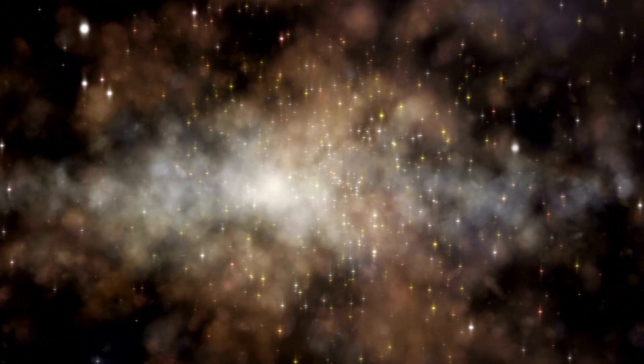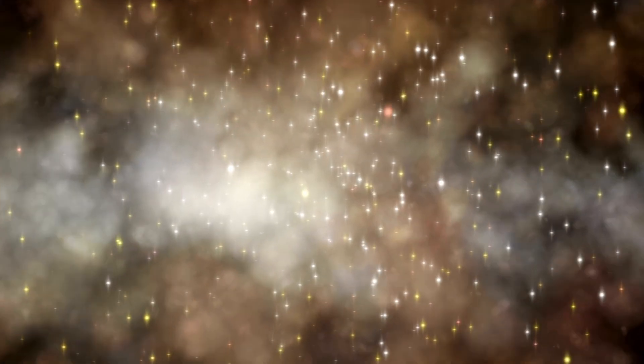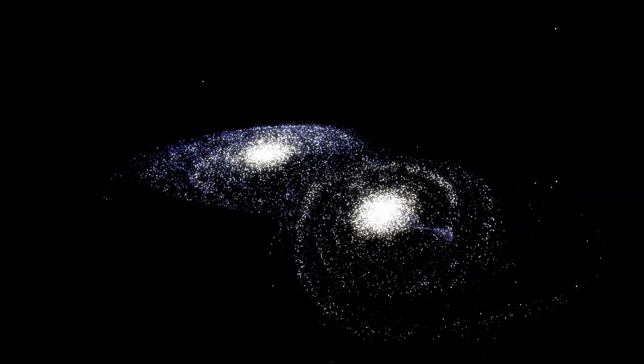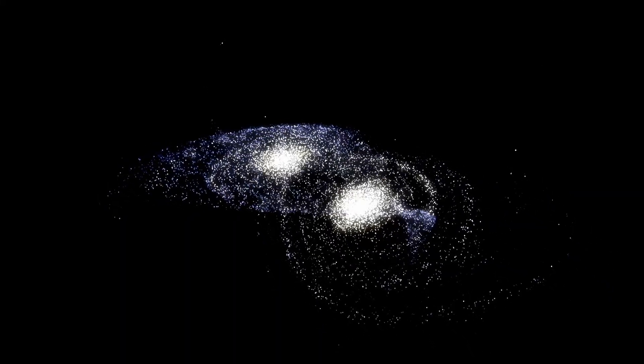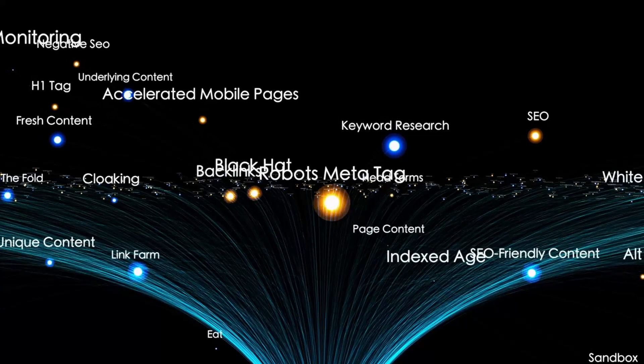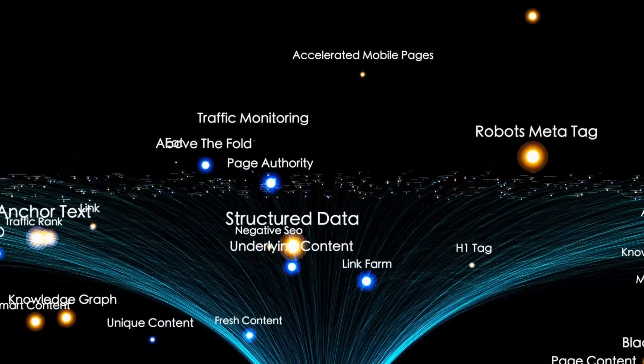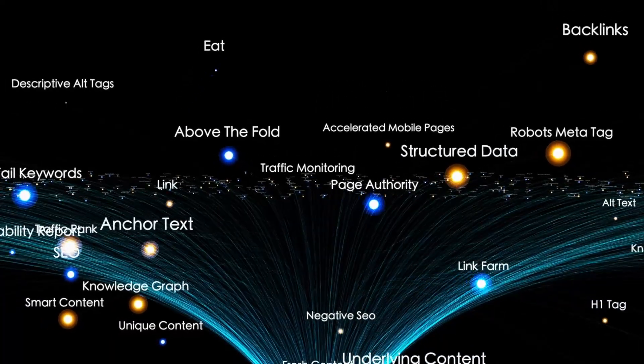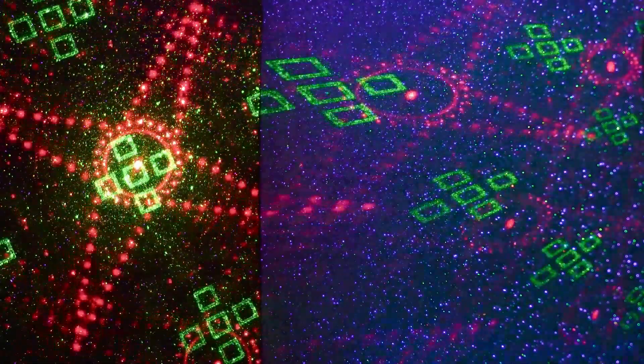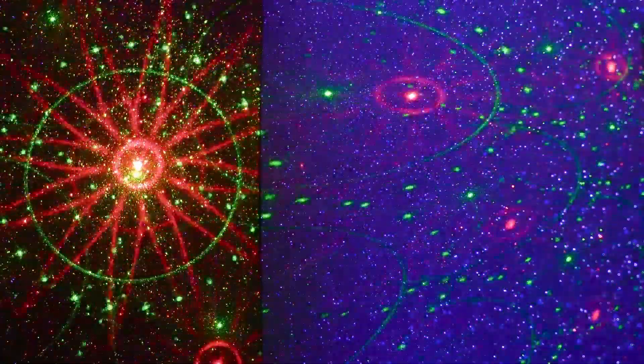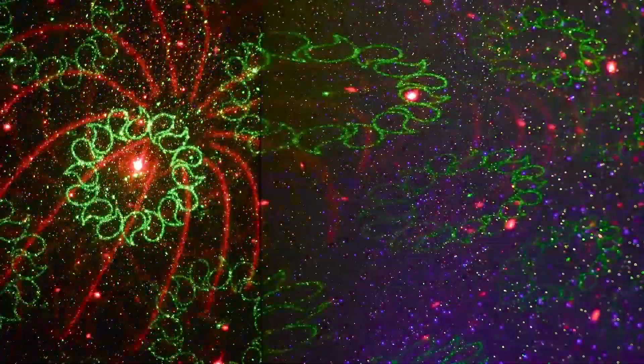Comets only get active closer in, when sunlight can heat their volatile materials. Yet 3I Atlas had begun venting gas far from the heat, as if it carried volatile compounds unknown in our own solar system. Then came the reports of an anti-tail, a strange, narrow tail pointing toward the sun, not away from it. Anti-tails are rare, and often the result of specific viewing angles and unusual dust patterns. But this one stood out. It held together too well with unusual symmetry. It hinted at a dust structure that wasn't just being pushed by solar wind, but possibly ejected in a controlled jet from one side of the object.